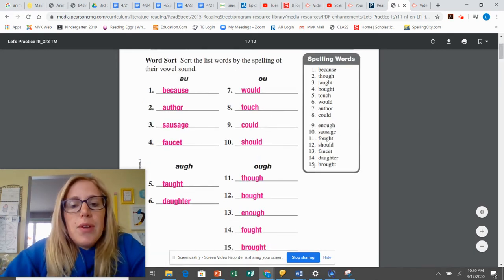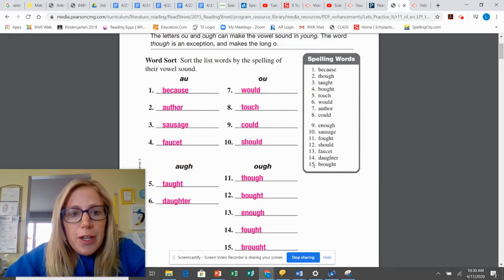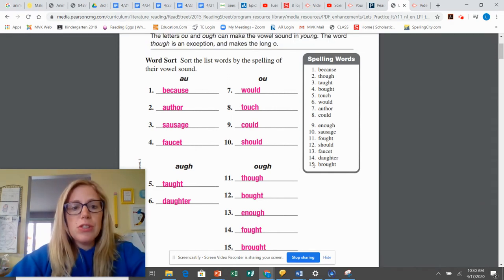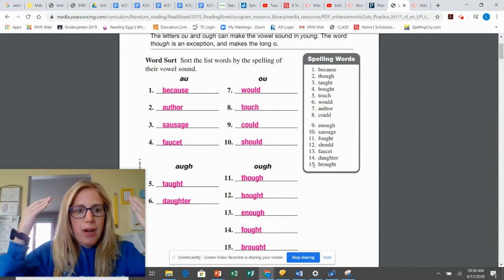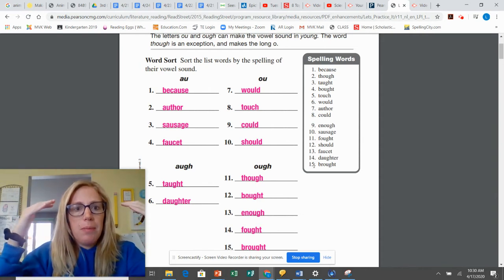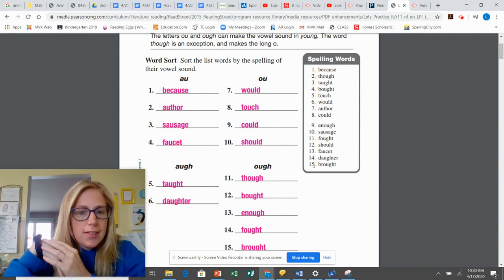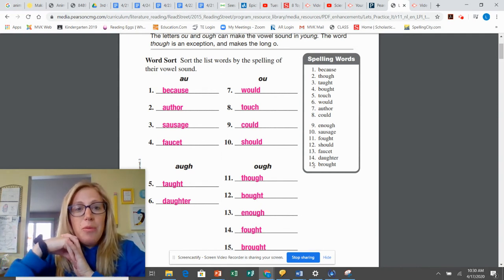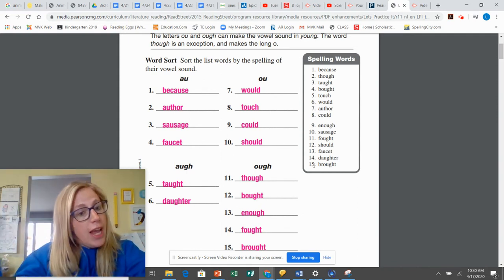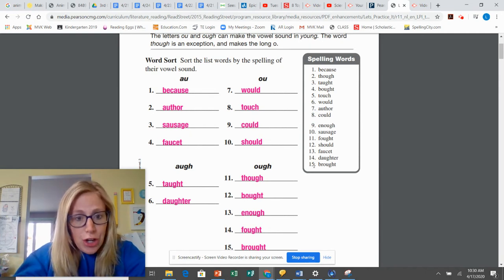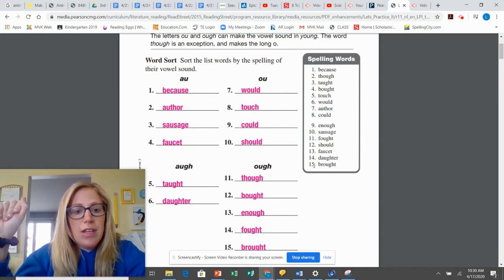So if you can see, these words are already sorted for you. We sort them to group them together to help us remember. This is the way we spell because, it's with the AU, just like author and sausage and faucet. And then when we have to use AUGH, it's taught and daughter. Those are using the AUGH.